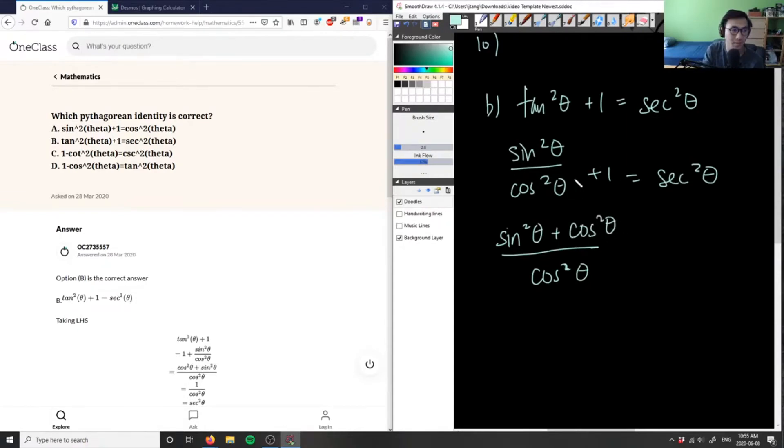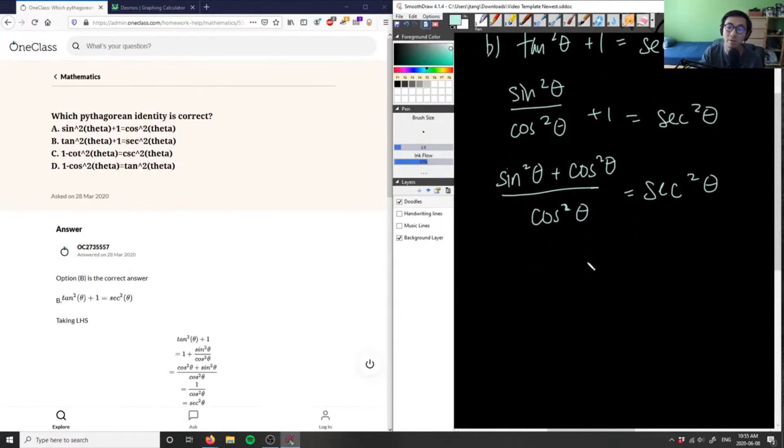This equals sec²θ. I can see that sin²θ + cos²θ equals one, because of my first Pythagorean identity. We know that sin²θ + cos²θ = 1.